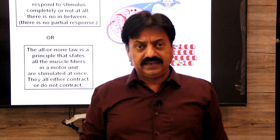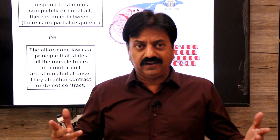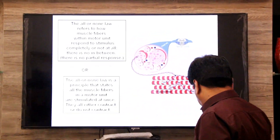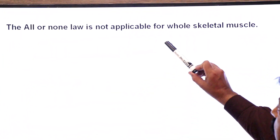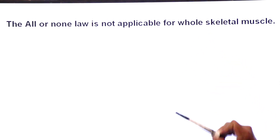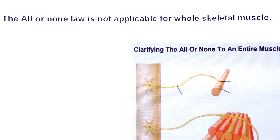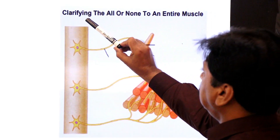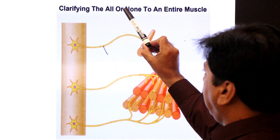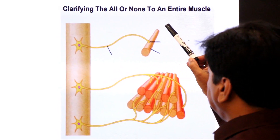A whole skeletal muscle does not obey All or None Law. The All or None Law is not applicable to the whole skeletal muscle. This diagram shows the answer and clarifies why All or None Law cannot be applied to an entire muscle.